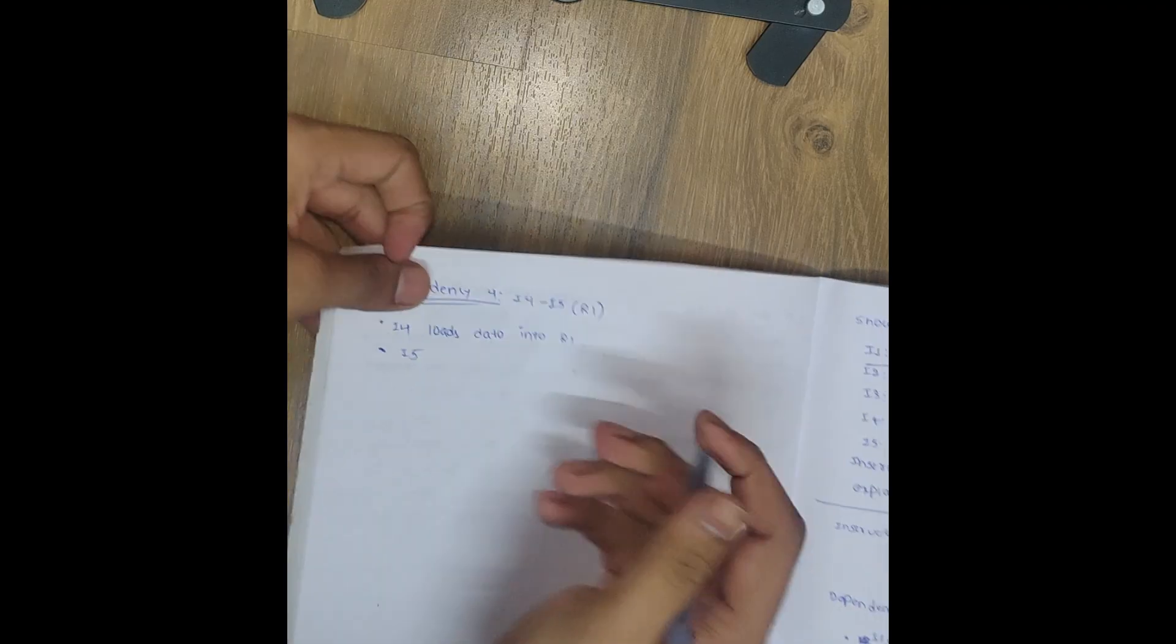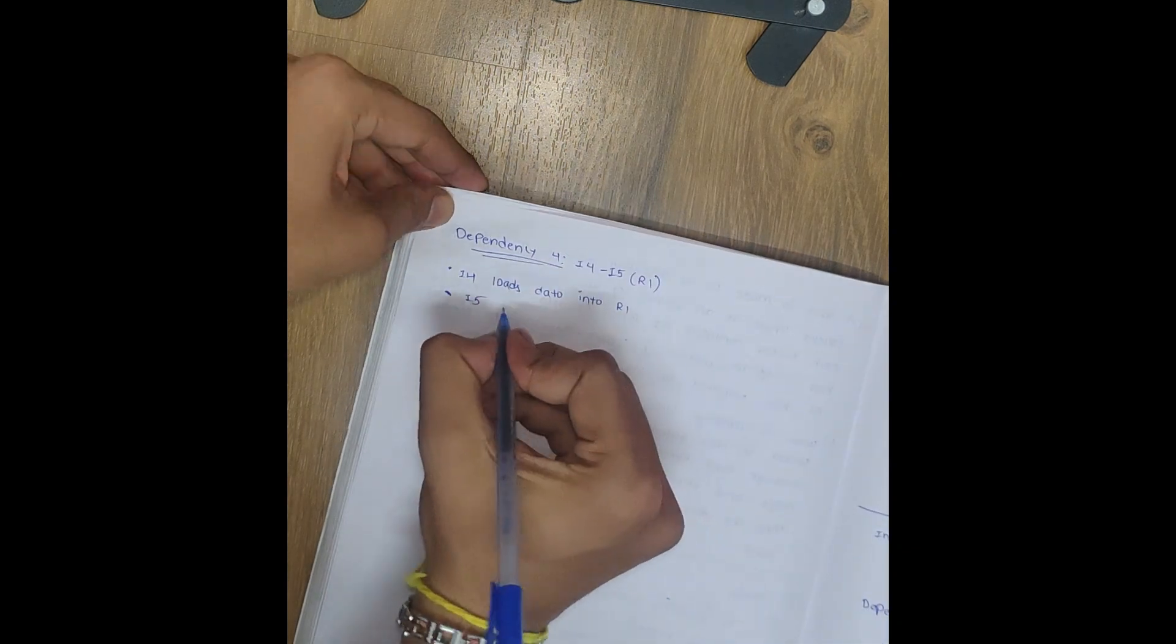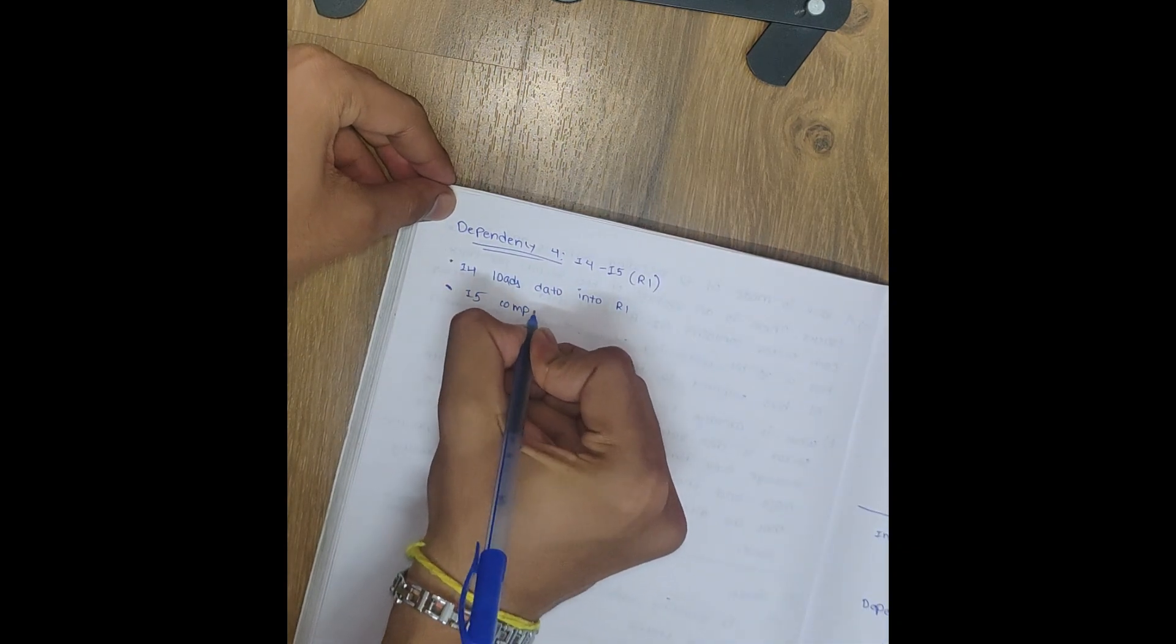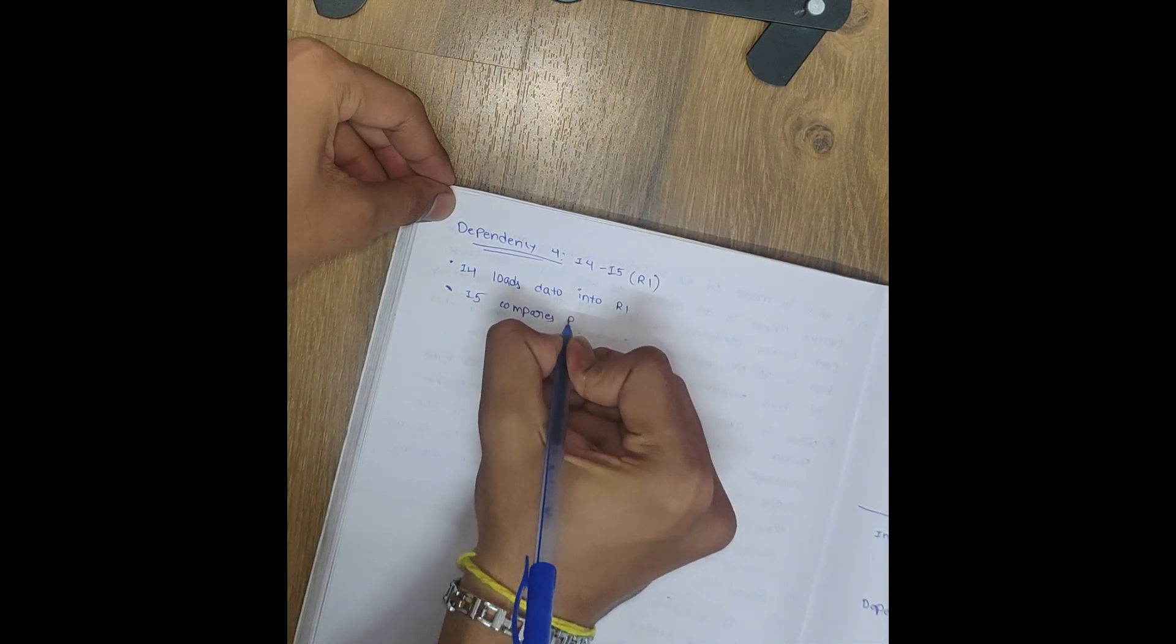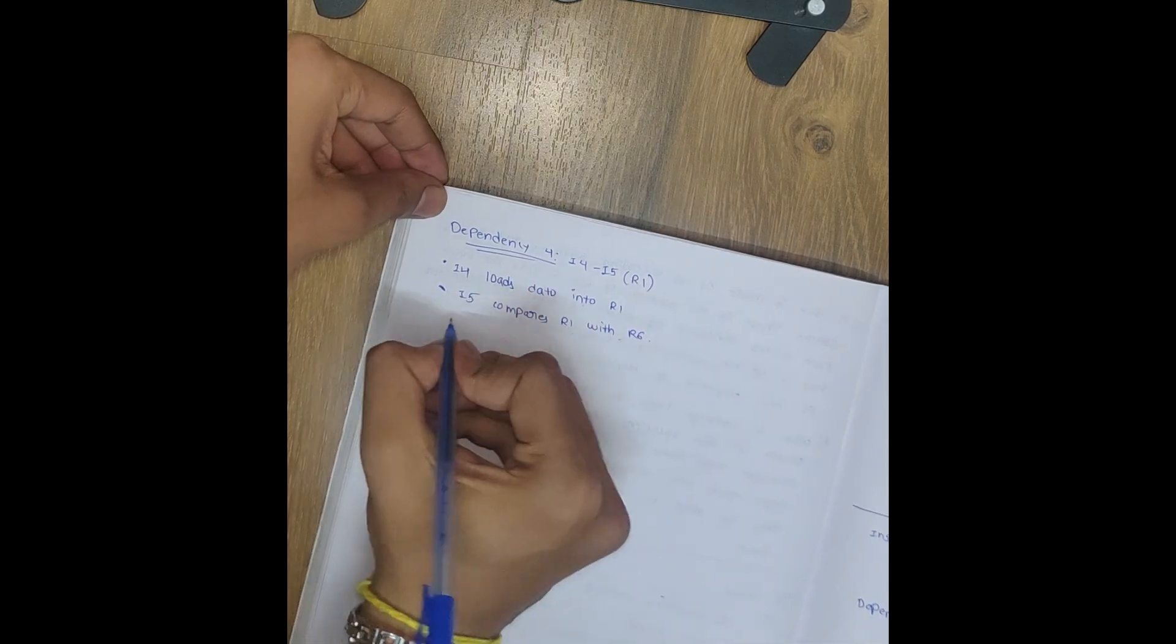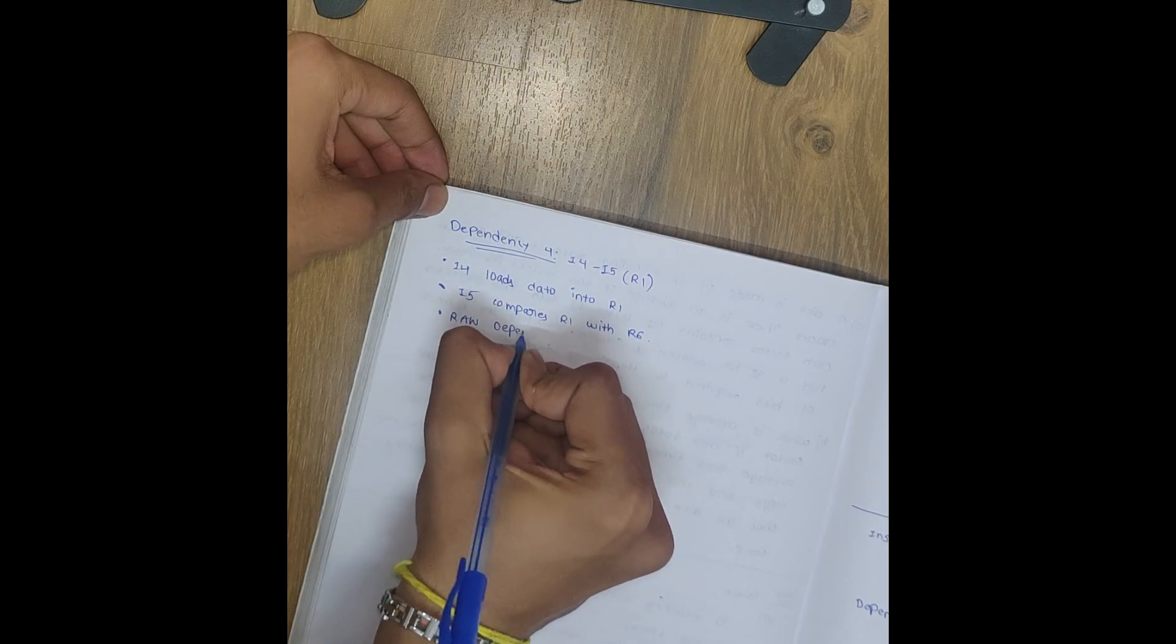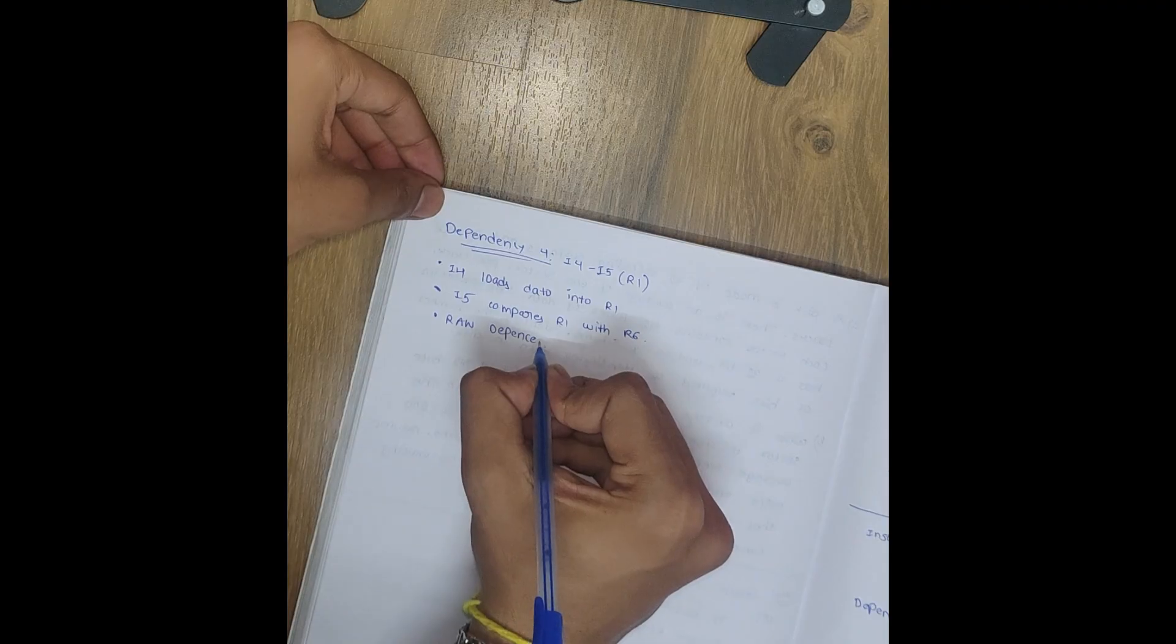R1 with R6. Now it is again a RAW dependency. First is loading and after that is comparing. Dependency on R1.